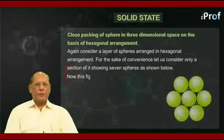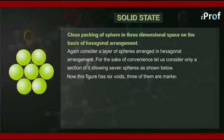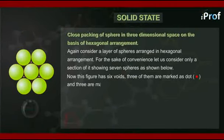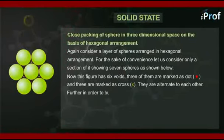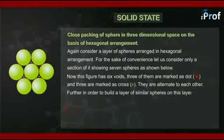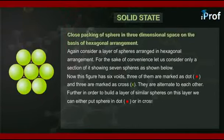Now, this figure has six voids. Three of them are marked as red dots and three are marked as green cross. They are alternate to each other. Further, in order to build a layer of similar spheres on this layer, we can either put spheres in red dot holes or in green cross holes.